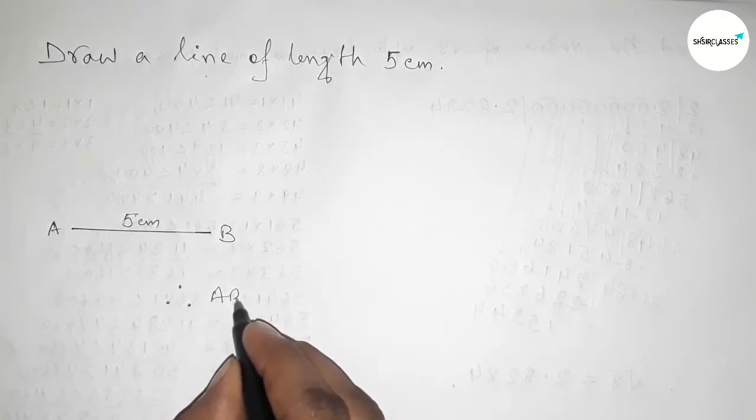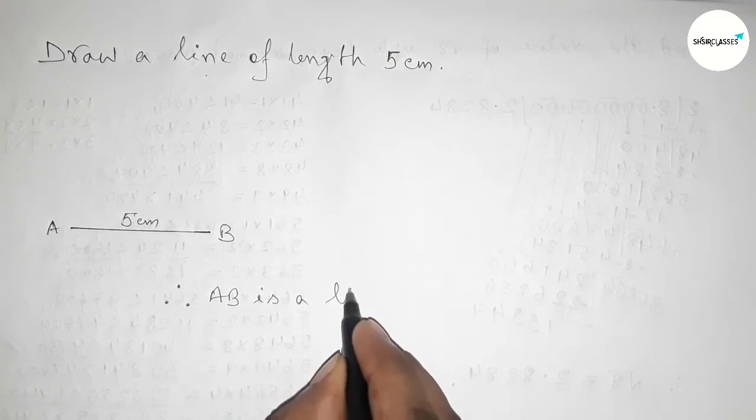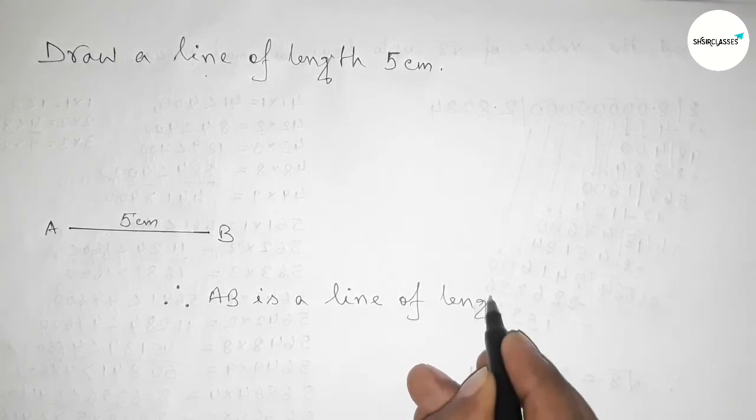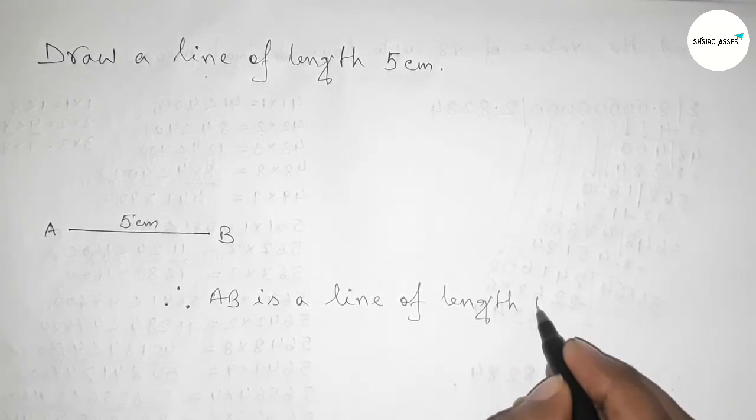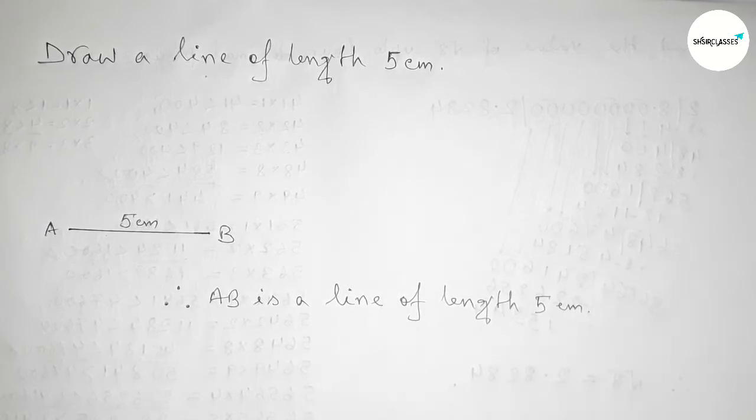Therefore, AB is a line of length 5 centimeter. And by this way you can draw a line of length 5 centimeter by using scale. So that's all, thanks for watching. If this video is helpful to you, then please share it with your friend. Thanks for watching.